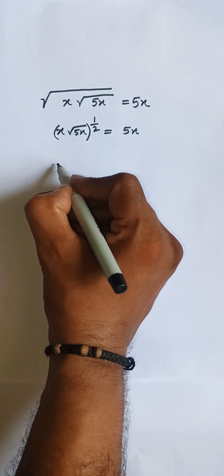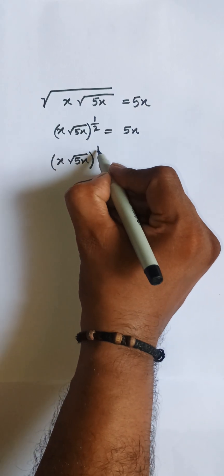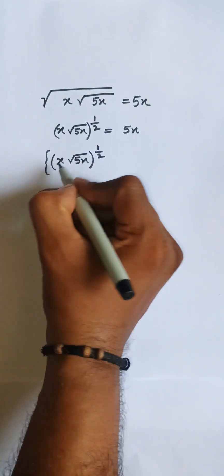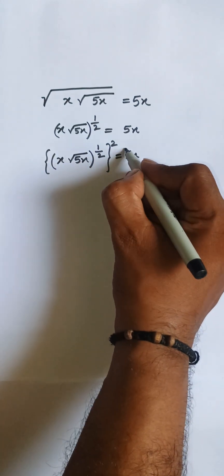putting square on both sides. So [x√(5x)]^(1/2), I am raising here to power 2. If I raise to power 2 on the left side, I need to raise to power 2 on the right side. So this power will multiply with 2.